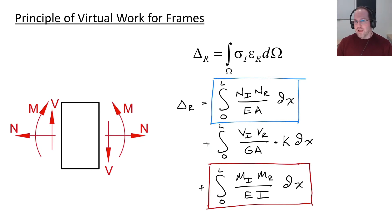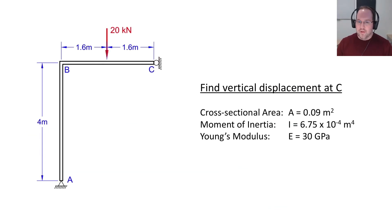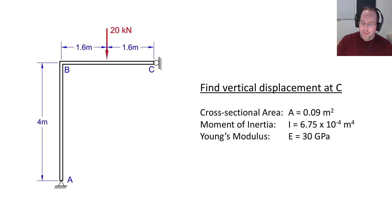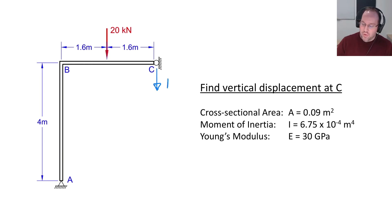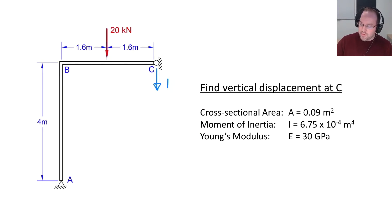Now that we've got the theory, let's dive into an example problem. We have a simple two-member frame with a column AB and a beam BC, all members having the same cross-sectional properties. There is a concentrated load of 20 kilonewtons acting downward, and we want to calculate the vertical displacement at C. For the virtual system we'll apply a unit load downward at C. The cross-sectional area, moment of inertia, and Young's modulus are given — E equals 30 GPa, which converts to 30 times 10 to the sixth kilonewtons per meter squared.